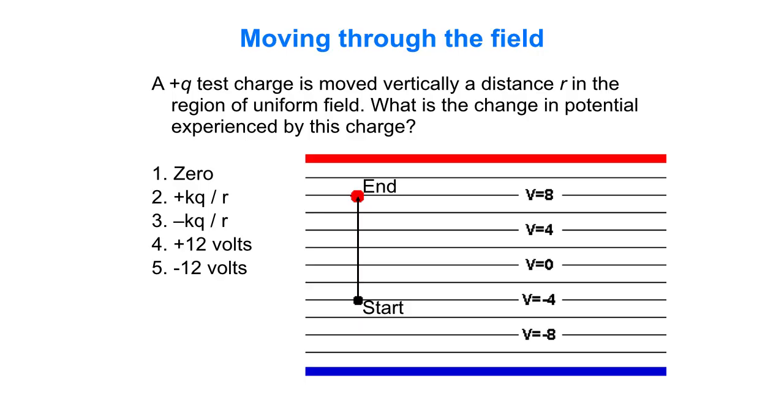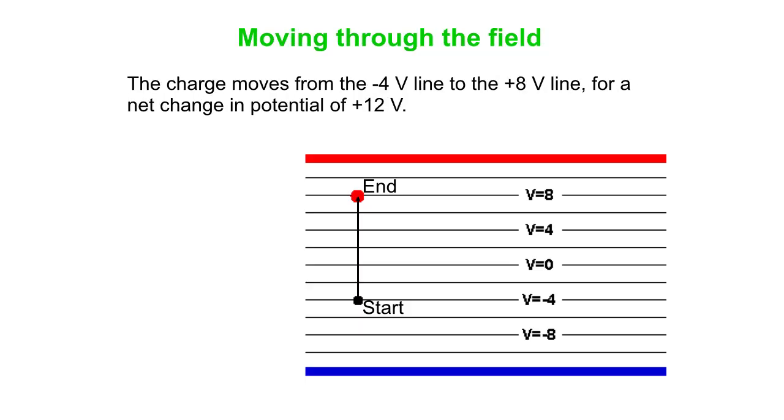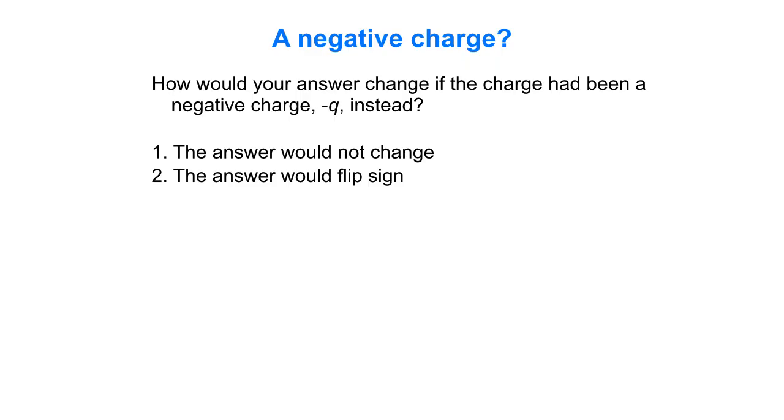Let's say we have a positive charge. Now we have a uniform field. We've got our two cookie sheets, our parallel plate capacitor here. If you go a distance r, what's the change of potential? The charge goes from the minus 4 volt line to the plus 8 volt line. So that's a net change of potential of plus 12 volts. How would your answer change if the charge had been negative instead of positive? The answer wouldn't change. The answer would flip sign. What do you think?